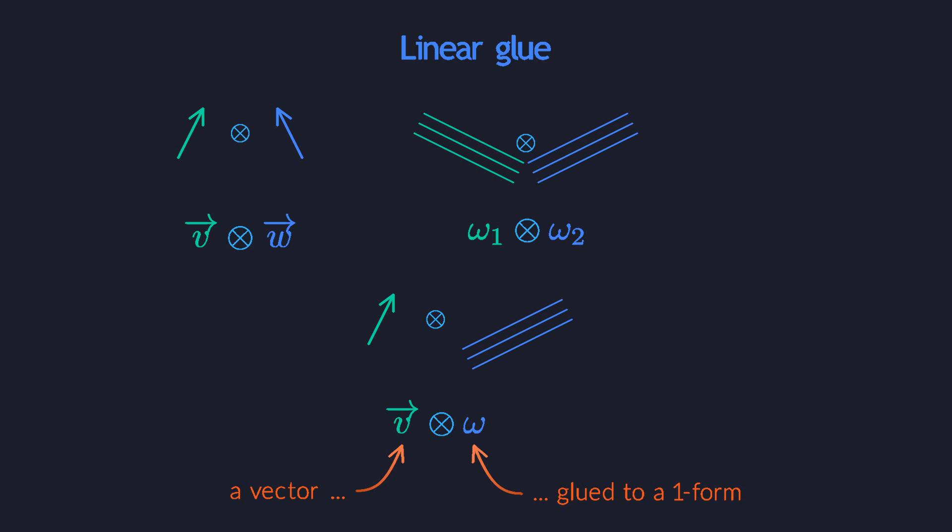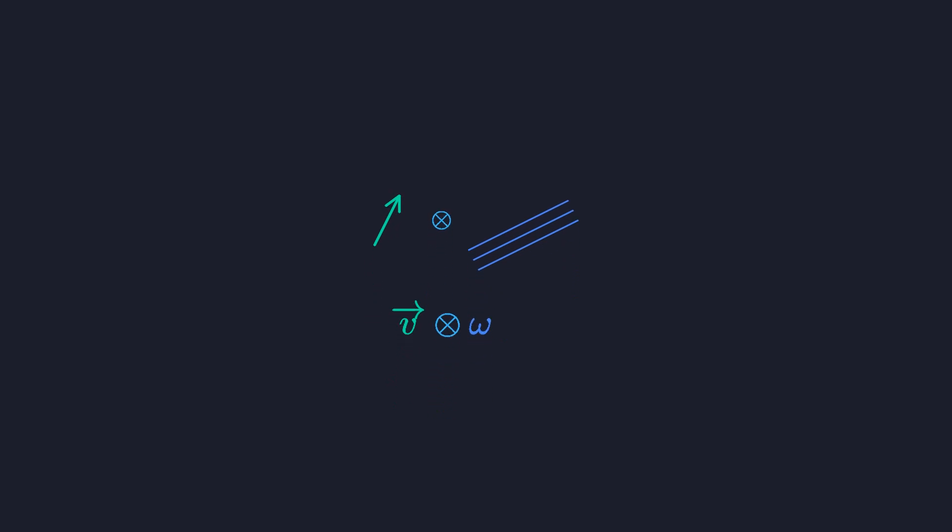In today's video we begin with the simplest case. We will stick a single vector and a single dual vector together. The glue is written as an operator that looks like a multiplication symbol in a circle. It doesn't really do much - it just keeps the two objects together. For now let's just ask, what does this new combined object do?